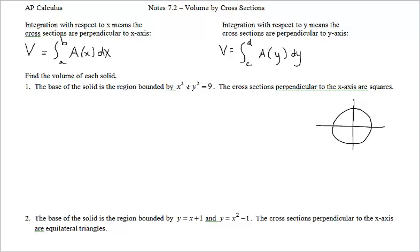Notice in this problem we're only given one equation for the base region — the floor plan. Sometimes we're given multiple equations because it takes multiple equations to create a base region. The cross sections are perpendicular to the x-axis, so every cross section we glue in here is going to be perpendicular to the x-axis.